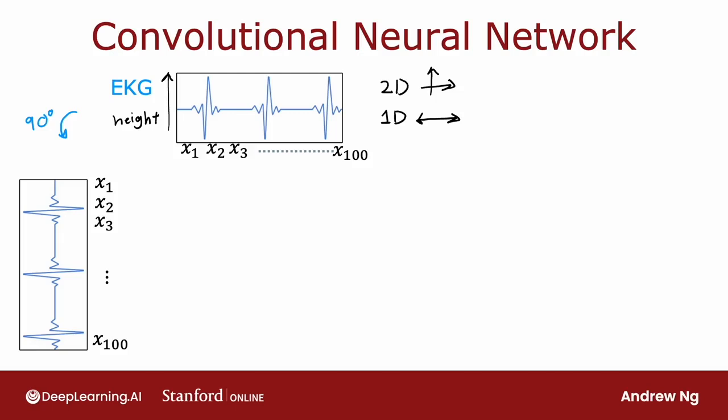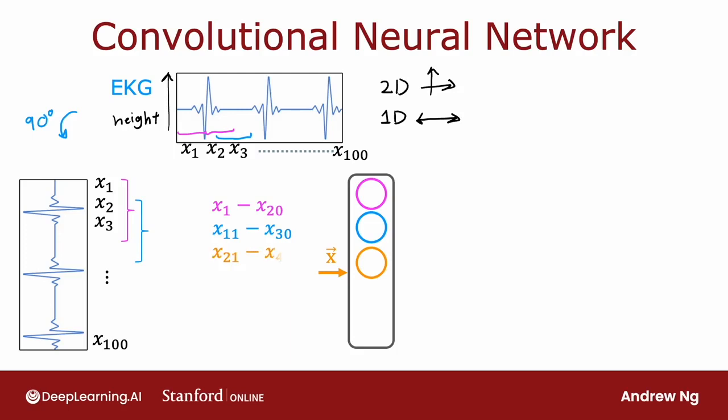And when I construct the first hidden layer, instead of having the first hidden unit take as input all 100 numbers, let me have the first hidden unit look at only x1 through x20. So that corresponds to looking at just a small window of this EKG signal. The second hidden unit will look at x11 through x30. So it looks at a different window in this EKG signal. And the third hidden layer looks at another window, x21 through x40.